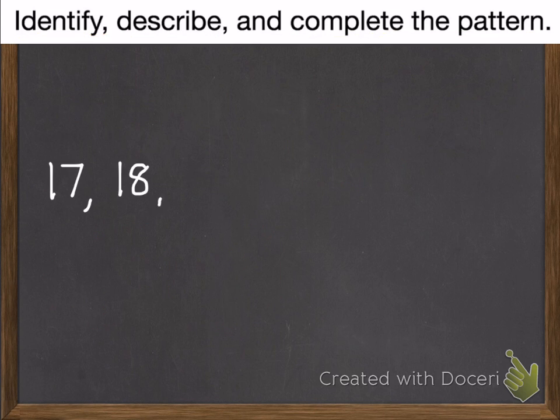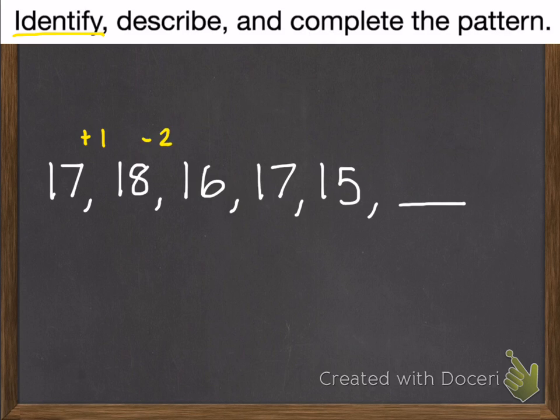Example number 2. Same instructions, identify, describe, and complete the pattern. So first we're going to identify. 17 to 18, you would add 1. 18 to 16, they did not add 1, they subtracted 2. Then from 16 to 17, add 1. 17 to 15, subtract 2.